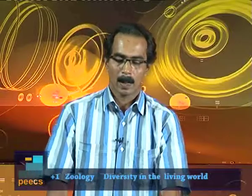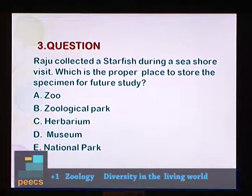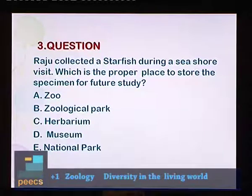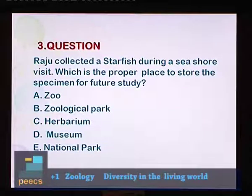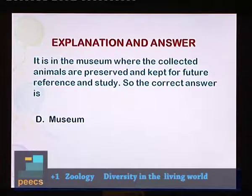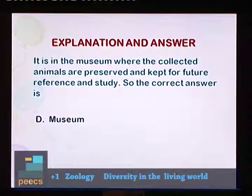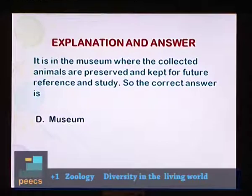Question 3: Raju collected a starfish during a seashore visit. Which is the proper place to store the specimen for future study? Options: A. Zoo, B. Zoological park, C. Herbarium, D. Museum, E. National park. It is in the museum where collected animals are preserved and kept for future reference and study. So the correct answer is D — museum.